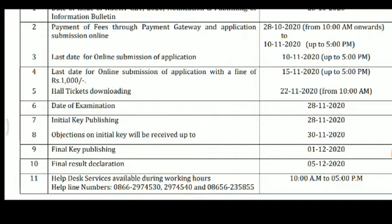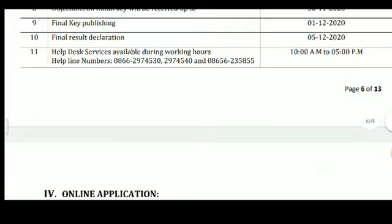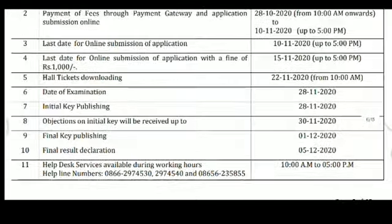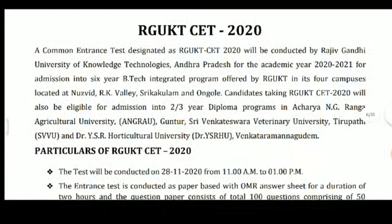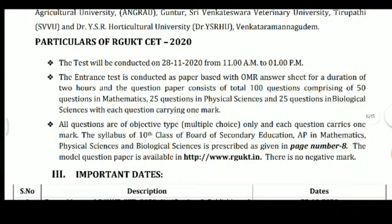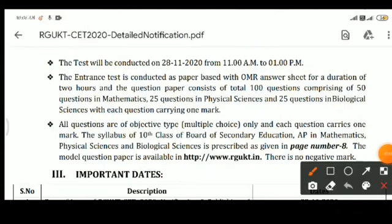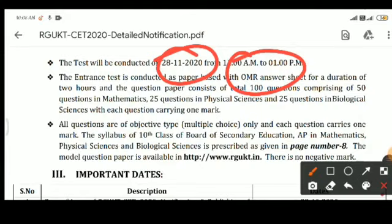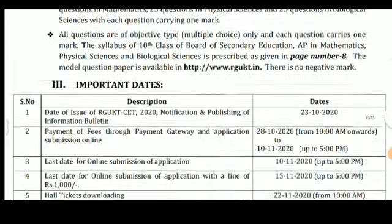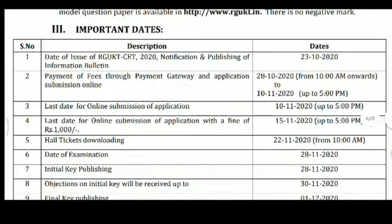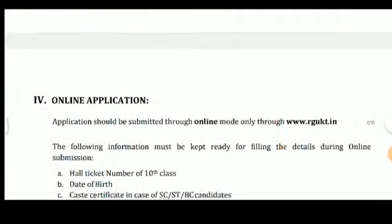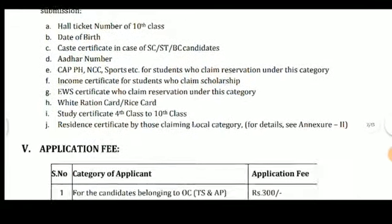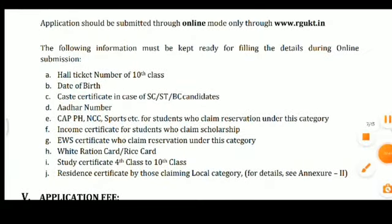If there are two or three incorrect answers and you want to make objections, you can raise objections. The deadline for objections is December 1st, and the final result will be declared on December 5th.